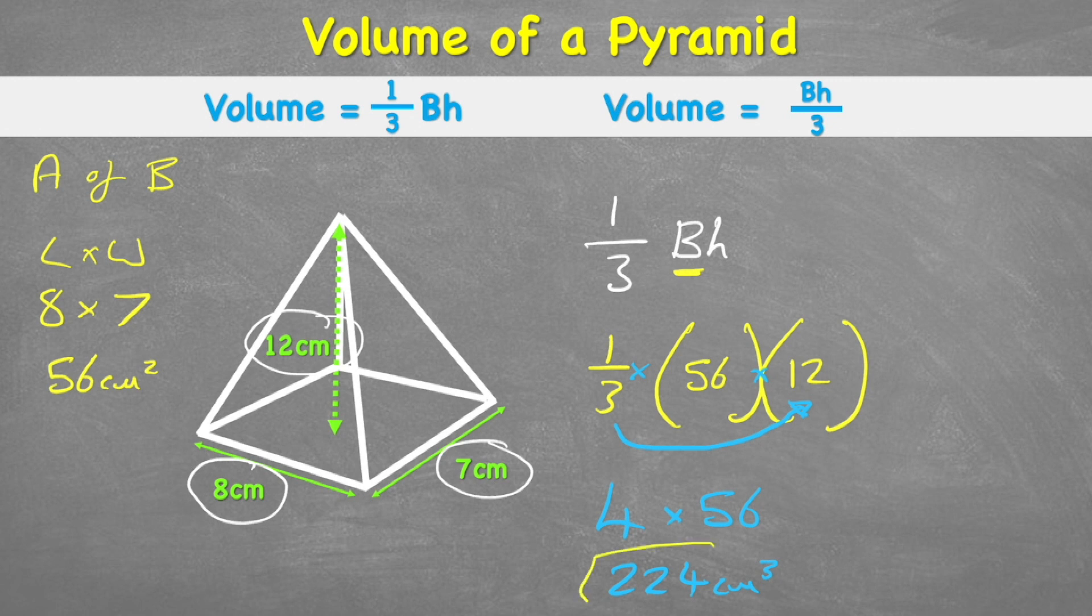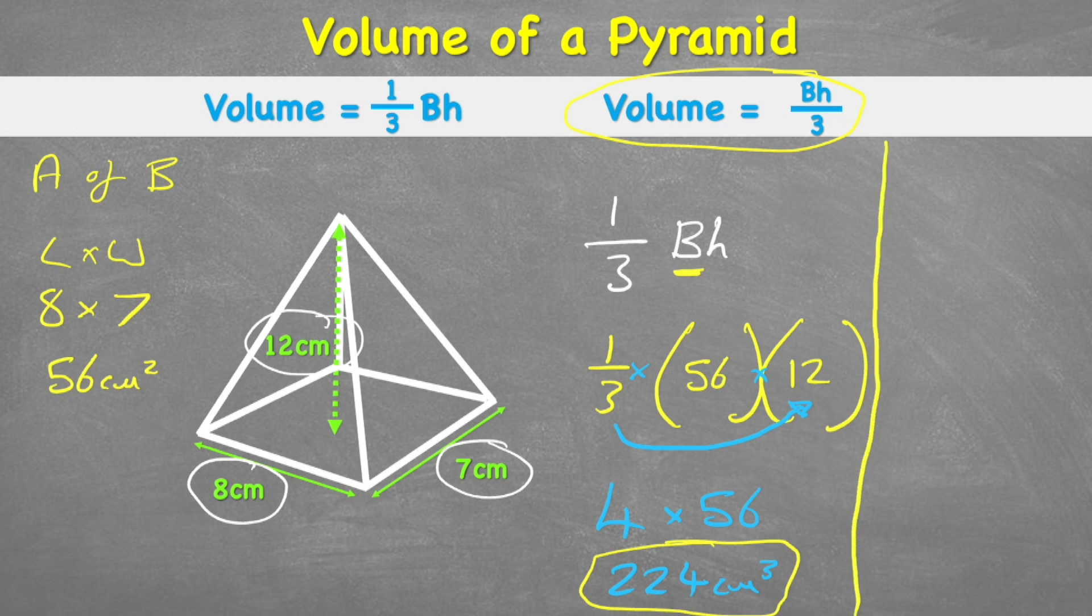Now, some of you observant ones will have noticed this second formula just over here. Well, this is actually exactly the same thing, but some people find it easier to understand. So let's see how we can work it out using that variation of the formula. So I have volume equals base times height divided by three. And remember the capital B is the area of the base. That's a very common mistake.